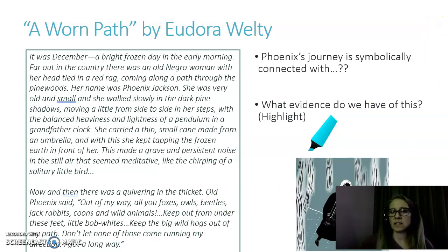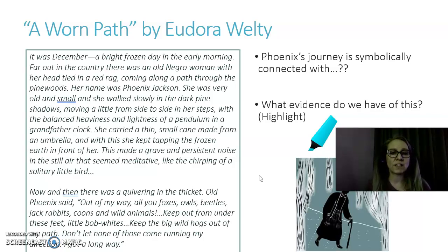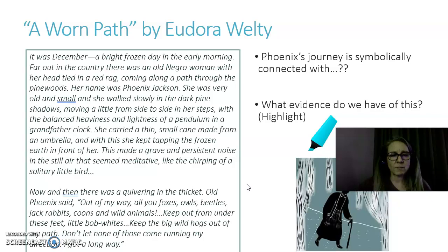In "A Worn Path" by Eudora Welty, Phoenix's journey is symbolically connected with what, and what evidence supports that? From the excerpt: "It was December, a bright frozen day in the early morning... there was an old Negro woman with her head tied in a red rag coming along a path through the pine woods. Her name was Phoenix Jackson... she walked slowly... with the balanced heaviness and lightness of a pendulum in a grandfather clock... 'Out of my way all you foxes, owls, beetles, jack rabbits, coons and wild animals... I got a long way.'" What is her journey symbolically connected with?